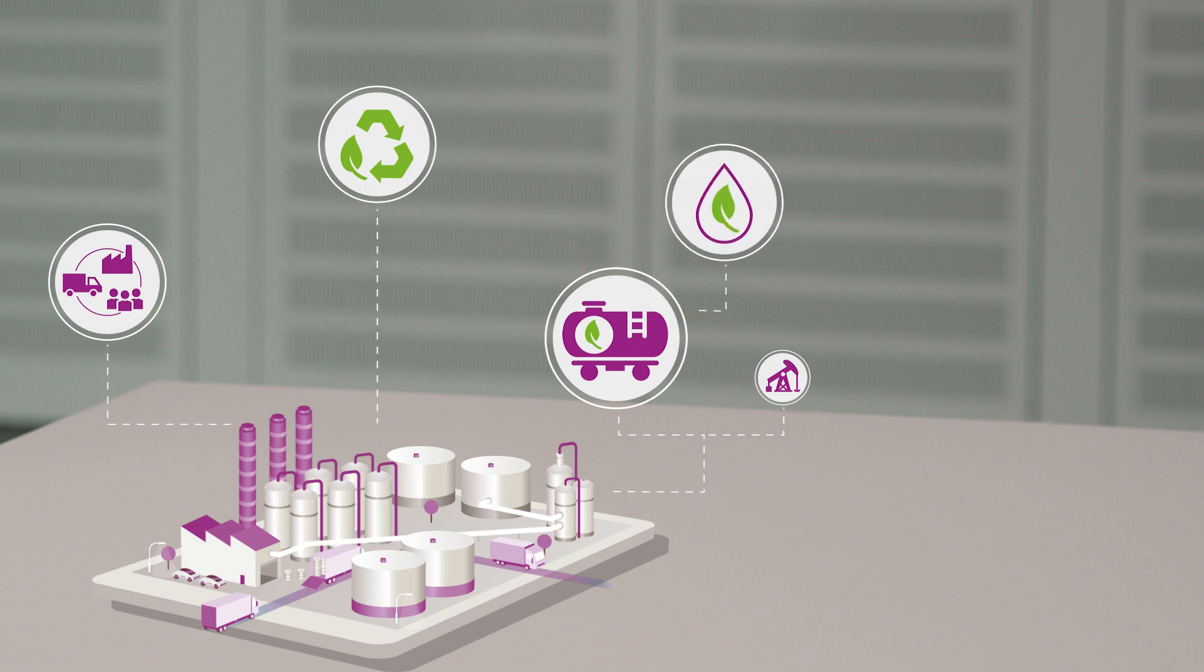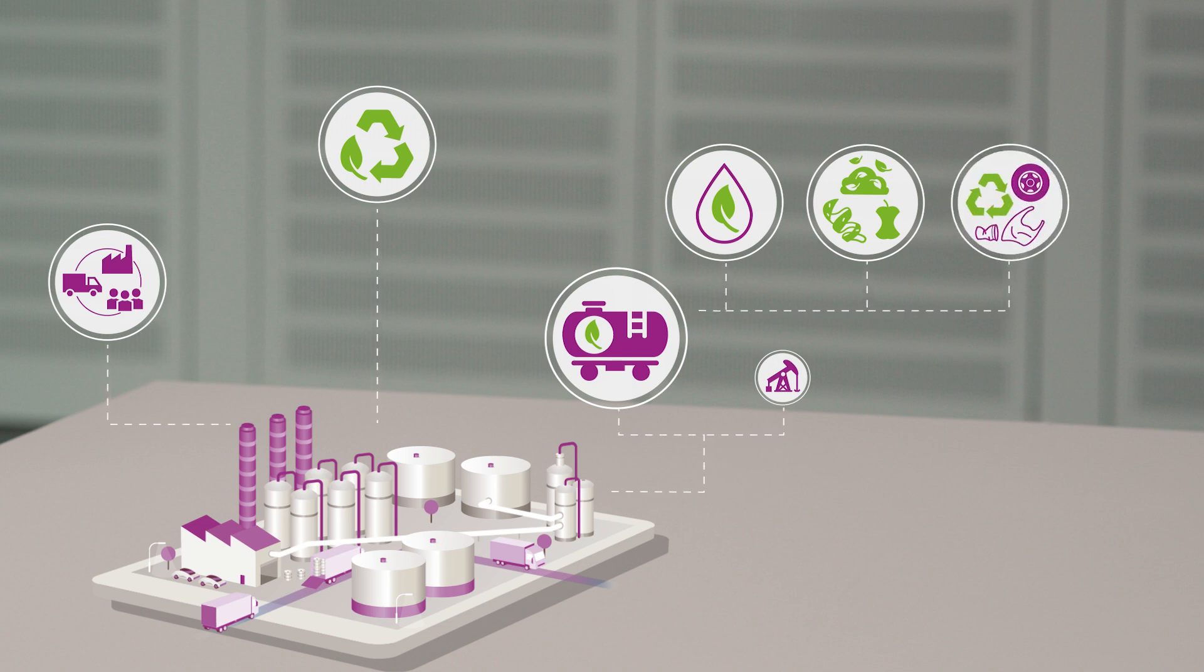Bio-based raw materials such as vegetable oils, bio-circular raw materials such as residues from forestry, agriculture or food residues, and circular raw materials such as end-of-life tires and end-of-life plastics.